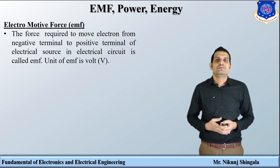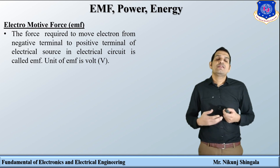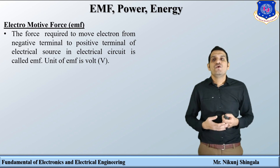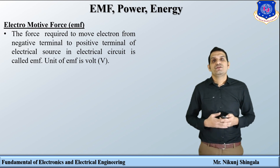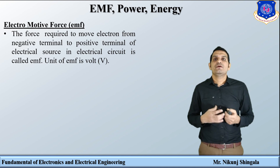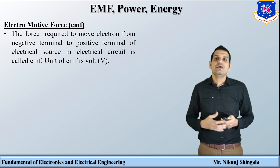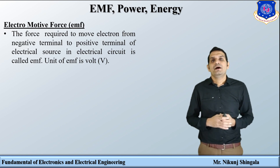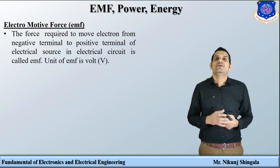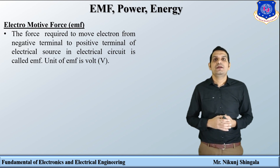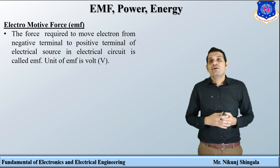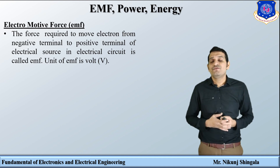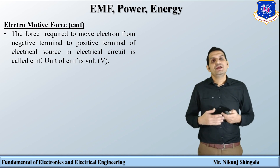The unit of EMF is volt. If a battery has an EMF of 4 volts, it means it supplies 4 joules of energy to each coulomb of charge. EMF is the force that causes current to flow in the circuit. What is the difference between EMF and potential difference? When a battery is applied across a conductor, current starts to flow. When current flows in the conductor, there is a potential difference across it according to Ohm's law. EMF is the cause and potential difference is the effect. Both are measured in volts.